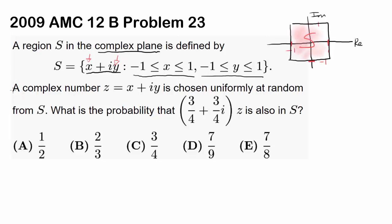A complex number Z equals x plus iy is chosen uniformly at random from S. The area of S is 4, since it's a square with side length 2 — 2 times 2 is 4. We wish to find the probability that (3/4 + 3/4i) times Z is also in S.